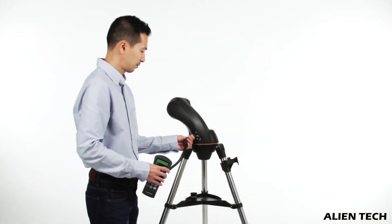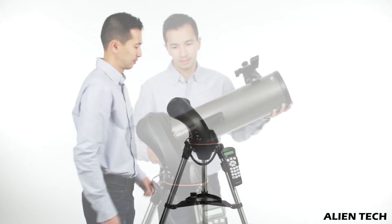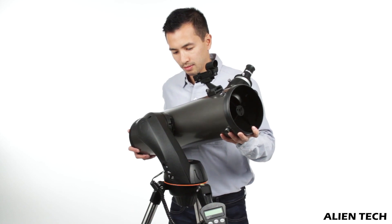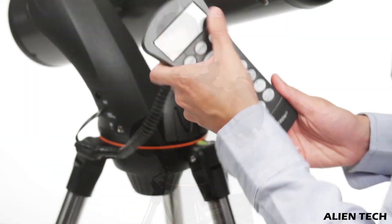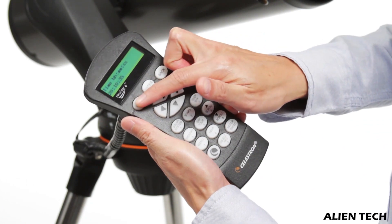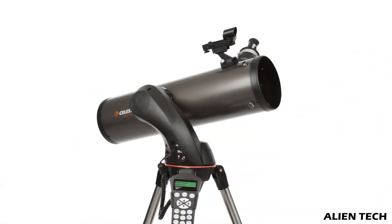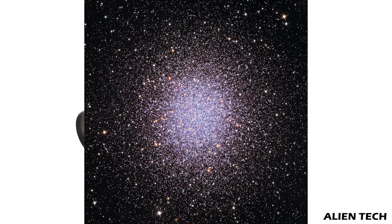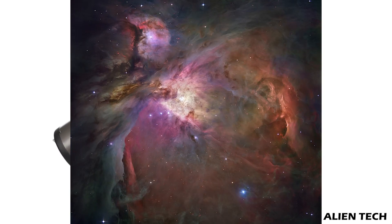This telescope also has a similar minor mount vibration issue as the 127 SLT. Other than that, it is a fine entry-level telescope that will introduce you to the realm of deep space objects. With the 130 SLT you can see details of the lunar surface, the rings of Saturn, the polar ice caps on Mars, the cloud belts of Jupiter, or a number of Messier objects such as the globular cluster in Hercules M13 or the Great Nebula in Orion M42.